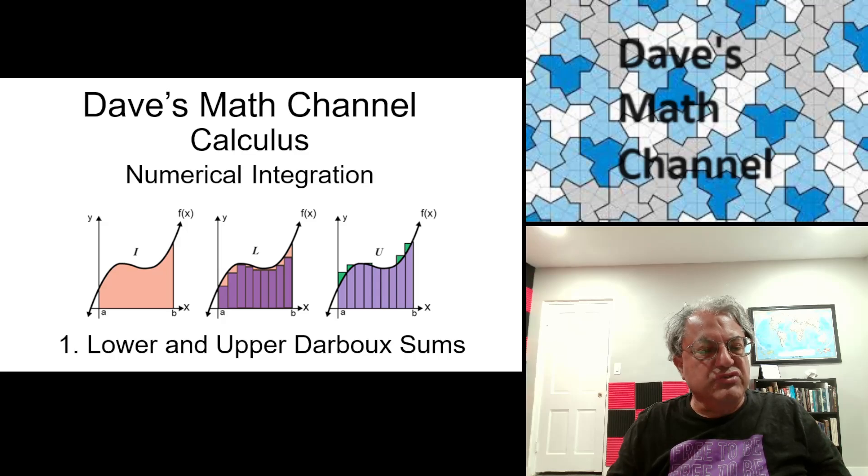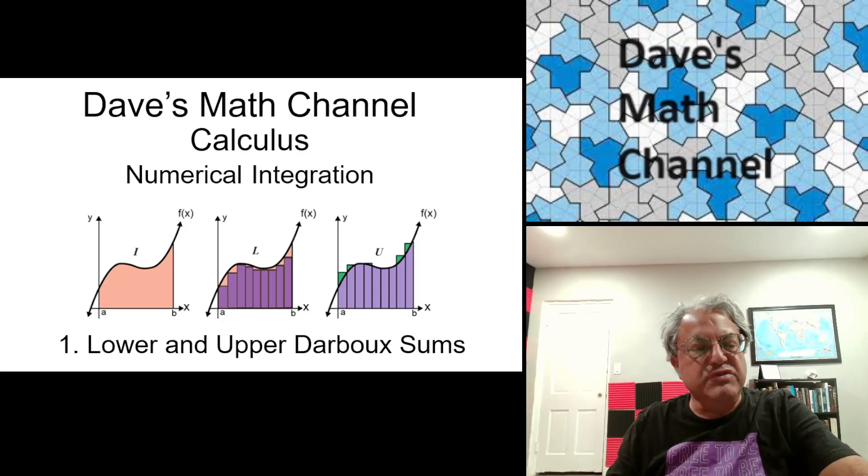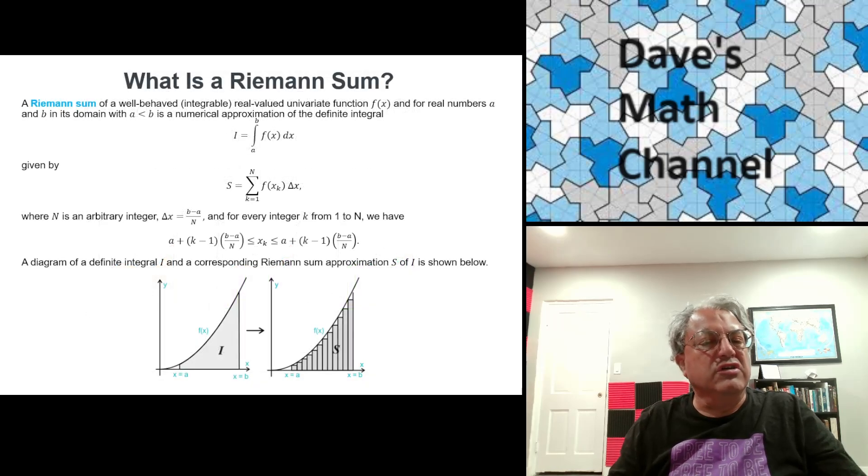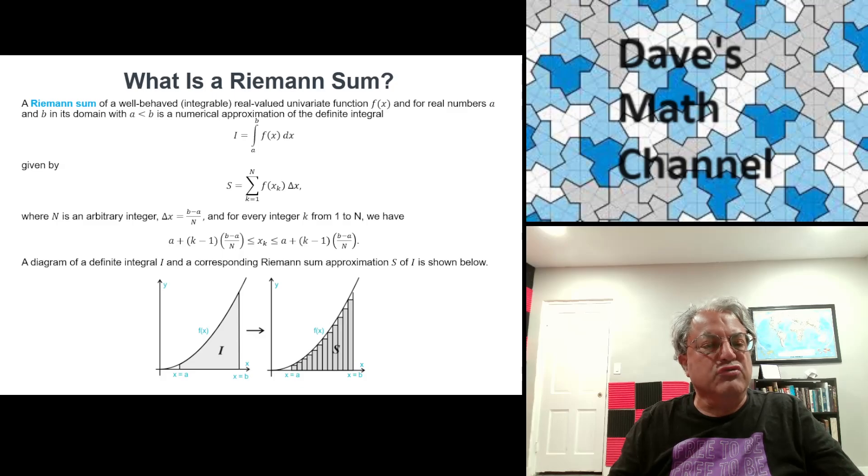The simplest examples of that are what are known as the lower and upper Darboux sums. So anyway, let's begin. Darboux sums are an example of what's called a Riemann sum. Sometimes people call the limit a Riemann integral, which is really just the same thing as the integral. Remember an integral, a definite integral, is just an area under a curve.